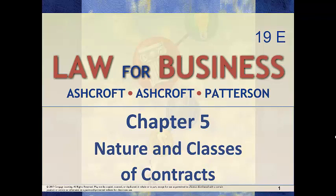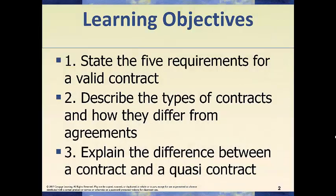Hey everybody, this is Dr. Dale Guffey and this is the video overview for Chapter 5, Nature and Classes of Contracts. With this chapter, we're leaving behind the first section of the text, which was more of a general overview of legal principles, and we're moving into our second section, which deals with contracts. This will encompass Chapters 5 all the way through 13. Chapter 5 is just an overview chapter giving you the basic framework of how contracts work. We're trying to accomplish three things: figure out the requirements for a valid contract, talk about types of contracts and how they're different from agreements, and explain the difference between a contract and a quasi-contract.